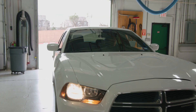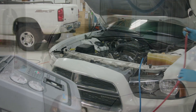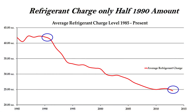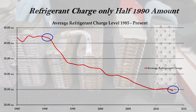In this video, we will discuss the critical importance of precise system charge level. As you can see from this graph, the average system refrigerant charge amount has been reduced dramatically since the mid-1980s. In fact, the average vehicle today uses only about half the amount of refrigerant used in 1990. In other words, the efficiency of systems has doubled in order to get the same job done with only half the amount of refrigerant.